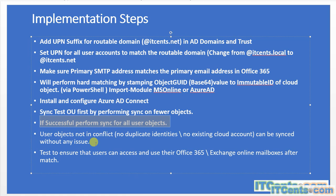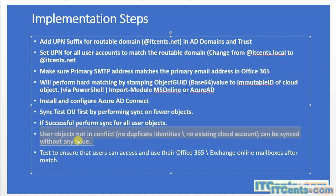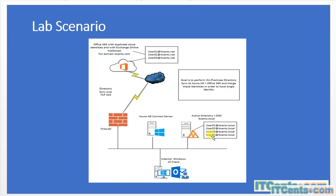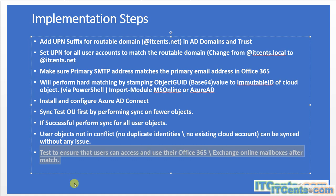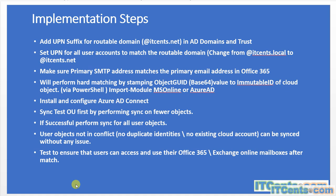Keep in mind that users which are not in conflict — because they don't have cloud accounts — won't be any issue and can be synced on the fly. For example, user4 doesn't have a cloud account, so that can be synced without any issue. Finally, we need to test that users can still access their mailboxes, licenses are still intact, and they can access all their Office 365 services after the match. Once we achieve that, our goal is accomplished.